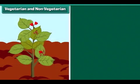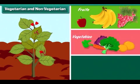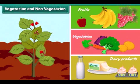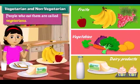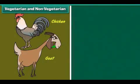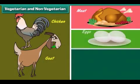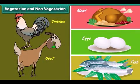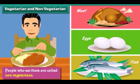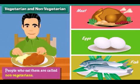Plant products like fruits, vegetables and dairy products are vegetarian food. People who eat them are called vegetarians. Animal products like meat, eggs and fish are non-vegetarian food. People who eat them are called non-vegetarians.